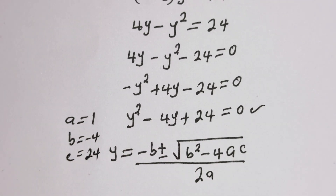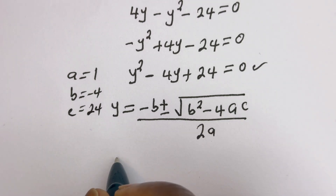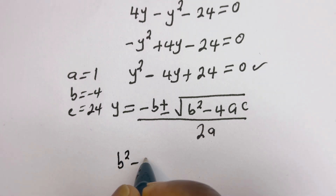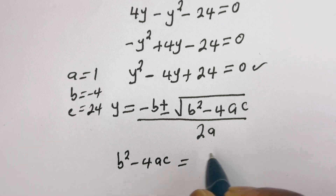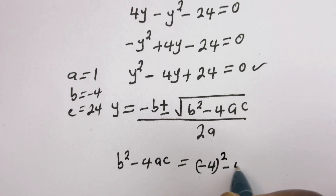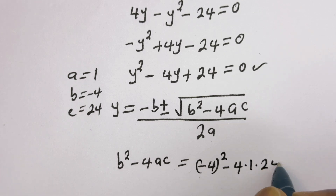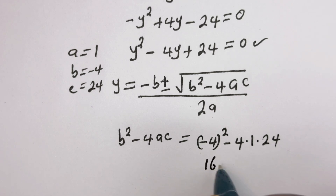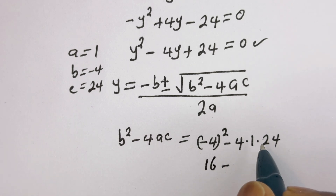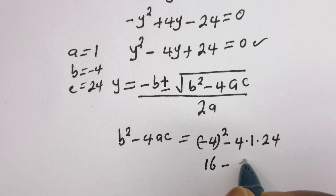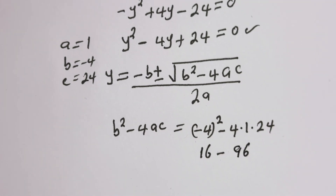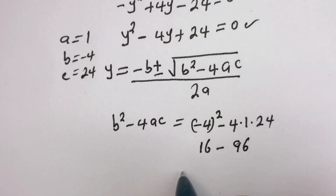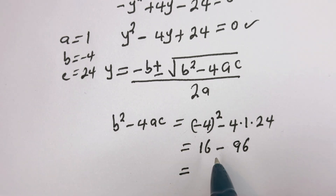So let's substitute here. Then b squared minus 4ac is equal to minus 4 squared minus 4 multiplied by 1 multiplied by 24. Then minus 4 squared is 16, minus 4 times 1 times 24, that is 96. This is equal to 16 minus 96, which gives us minus 80.